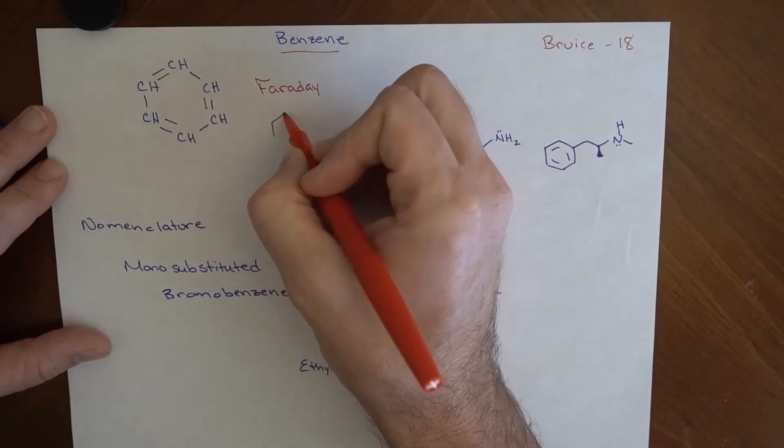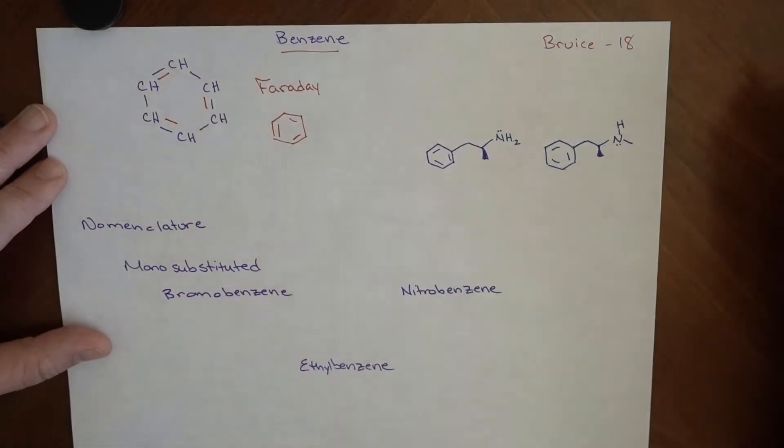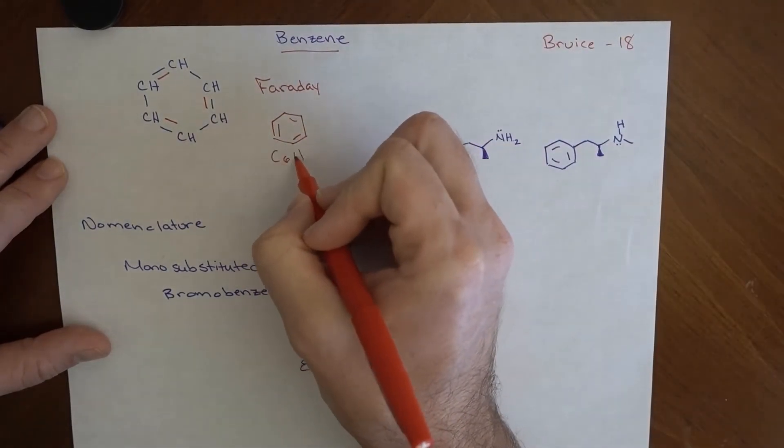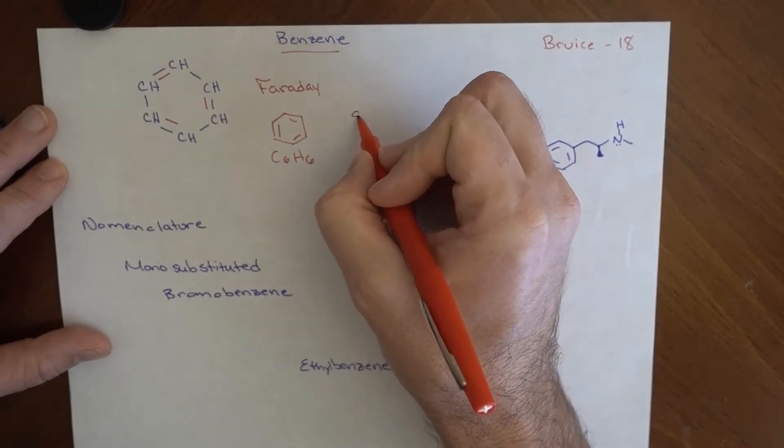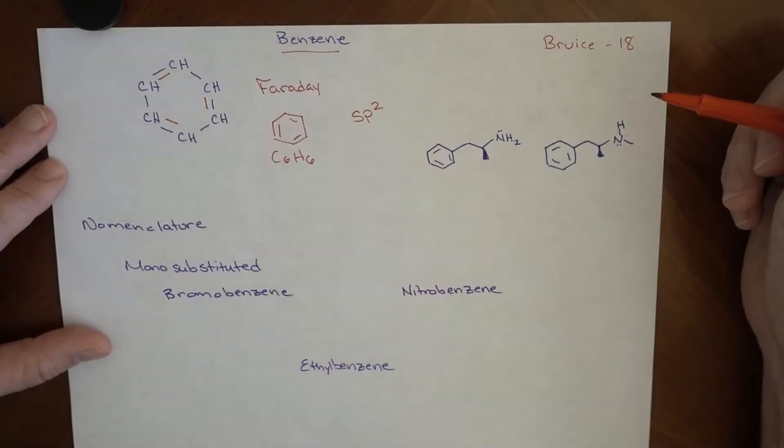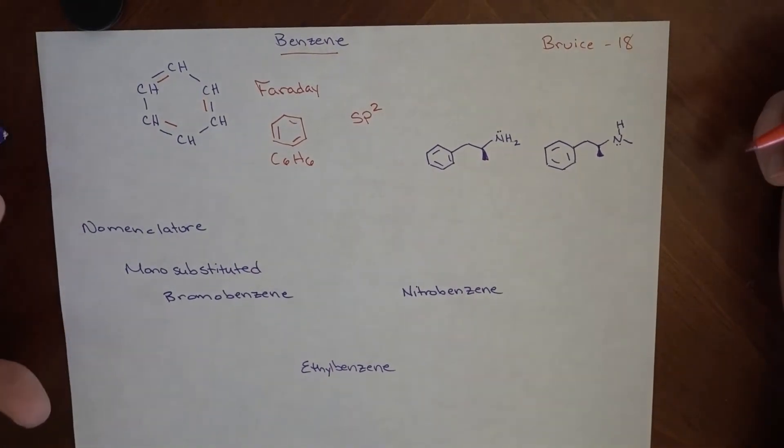And so when we draw this, we typically draw it to look like this. And this would have the formula C6H6. The thing that we need to know about this is that every carbon is sp2 hybridized. And that is more or less just kind of what benzene is.